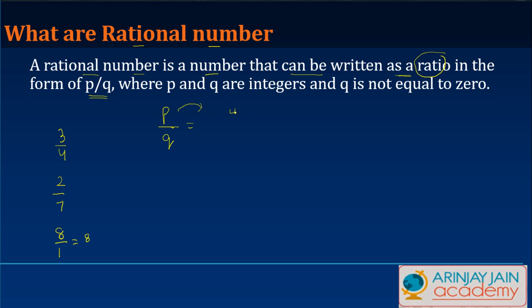Both of whom are integers, right? And q is not equal to zero. Why? Because the moment q becomes equal to zero, then we will have p upon zero, and any number divided by zero we know is undefined.